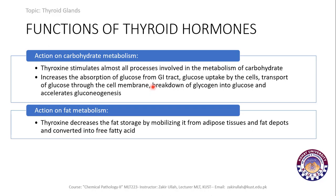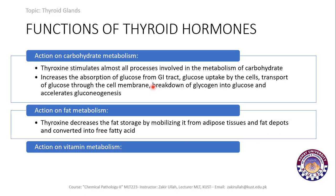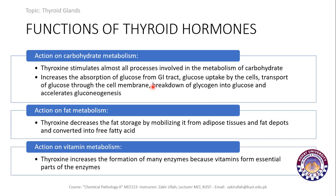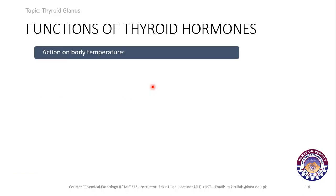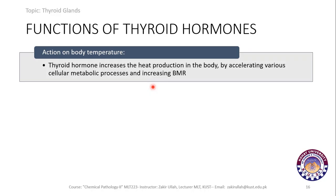On fat metabolism: T3 and T4 decrease the storage of fats, mobilizing fat from adipose tissue and fat droplets so they can be converted into free fatty acids. On vitamin metabolism: thyroxine increases the formation of many enzymes, because vitamins form an essential part of those enzymes.